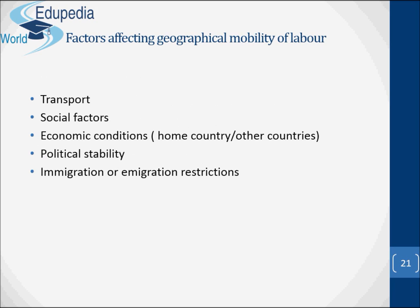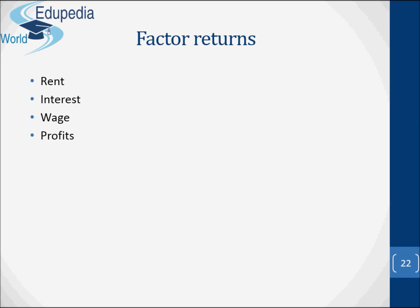Factors that affect geographical mobility of labor include transport, social factors, economic conditions, political stability, and immigration restrictions. The factor returns consist of rent, interest, wage, and profits.